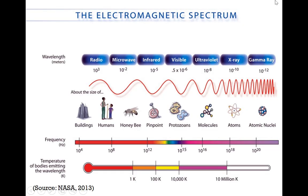This second electromagnetic spectrum diagram shows the wavelength alongside familiar objects to give a sense of scale. The diameter or length of each object corresponds to the wavelength shown. For example, radio waves have wavelengths as large as a building, microwaves are much smaller, and as we move to gamma rays, the wavelengths are the size of atomic nuclei.